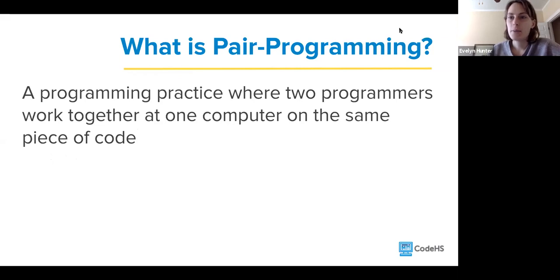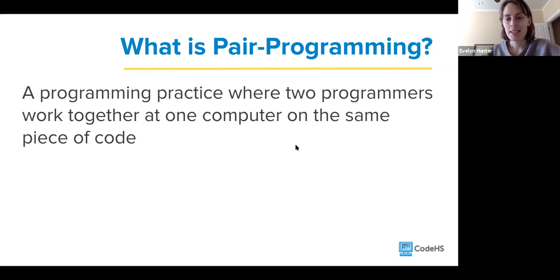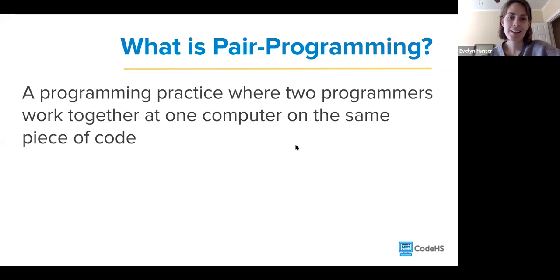So what is pair programming? Pair programming is a practice where two programmers work together at one computer on the same piece of code. It's great for student learning and something we see a lot in industry — computer programmers aren't working in isolation anymore; they're very much working in groups. It's a really good practice to sit down with somebody and talk about problem decomposition and critical thinking.